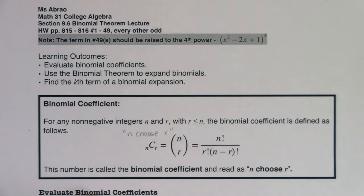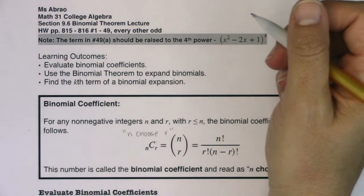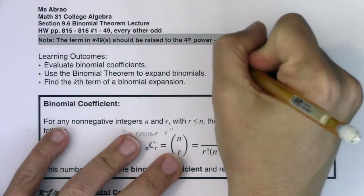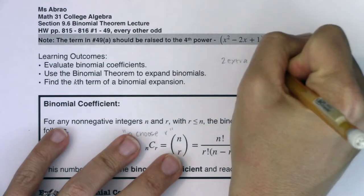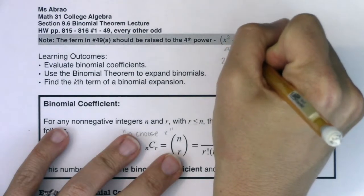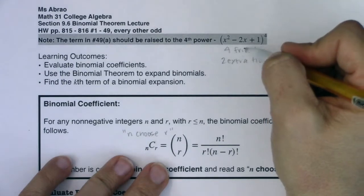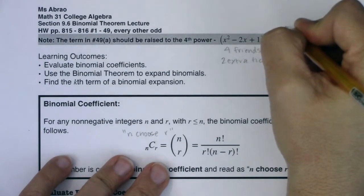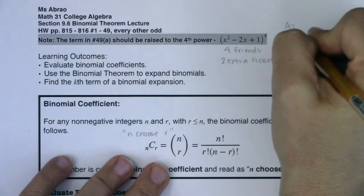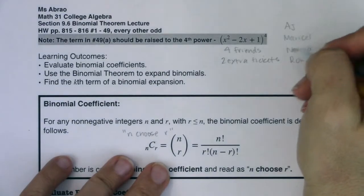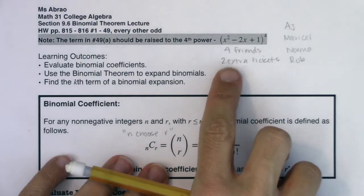Let me explain what 'n choose r' means with an example. I'm about to go see Spider-Man: Homecoming, and I bought my ticket but have two extra tickets. The problem is I have four friends. I want to think about how many different ways I could give those two tickets to my four friends — how many different combinations of two people I can get from four friends.